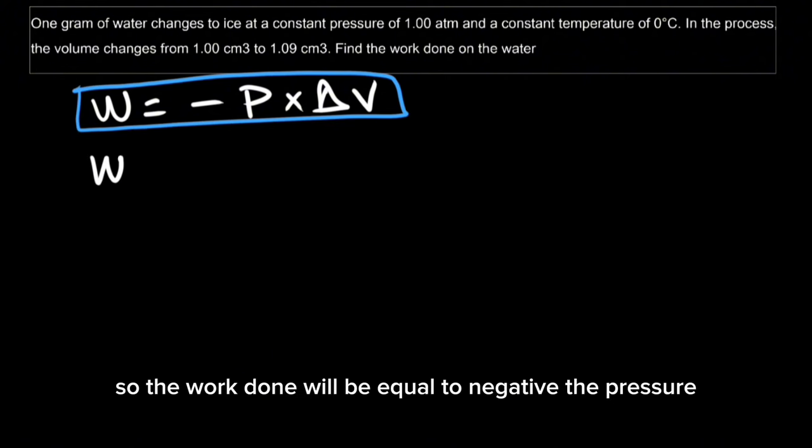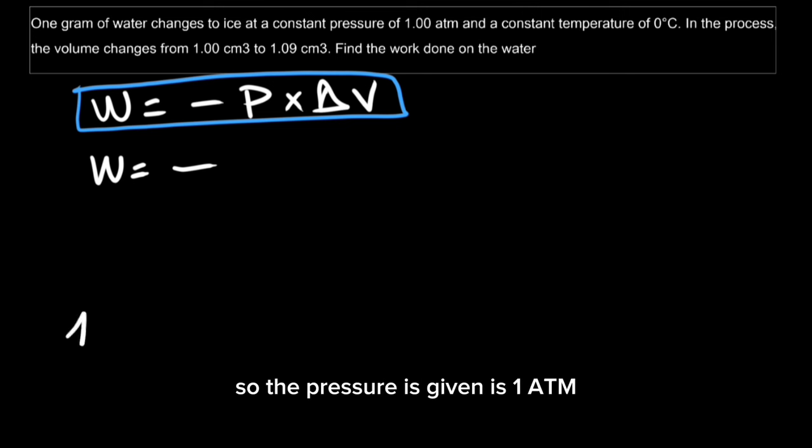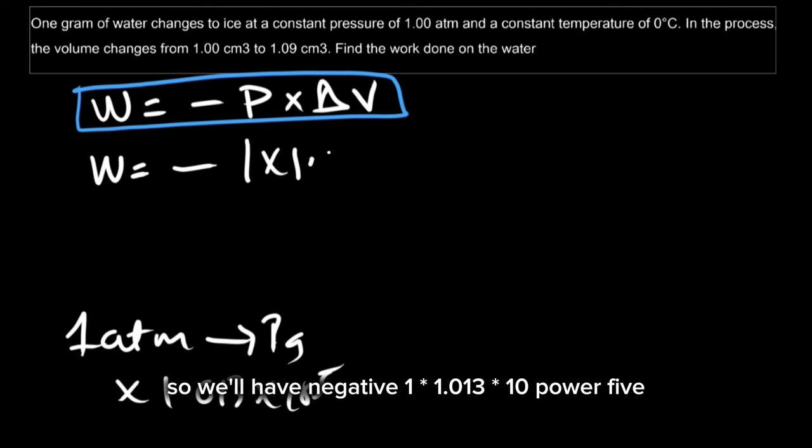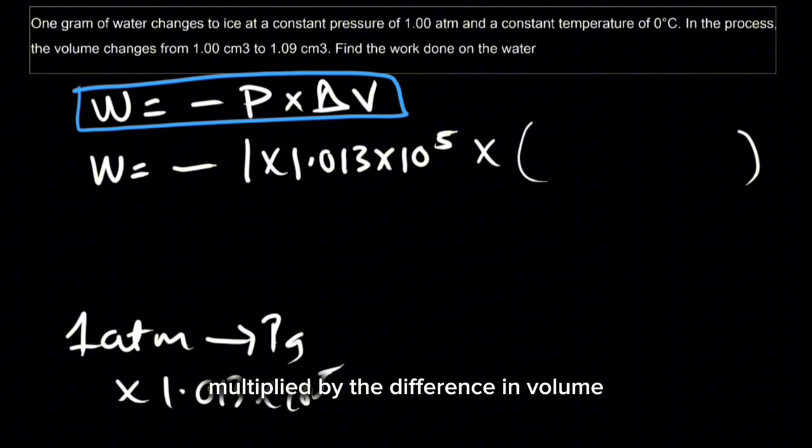So the work done will be equal to negative the pressure. The pressure is given as 1 atm, which changes to Pascal by multiplying by 1.013 times 10 power 5. So we'll have negative 1 times 1.013 times 10 power 5 multiplied by the difference in volume.